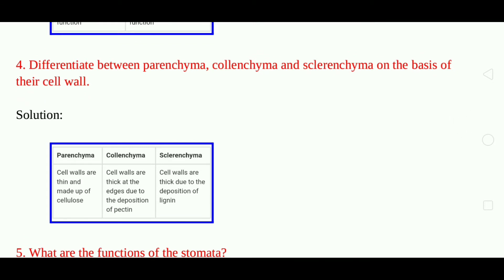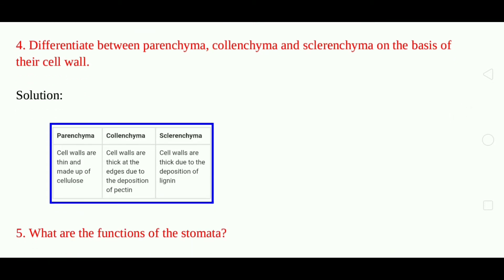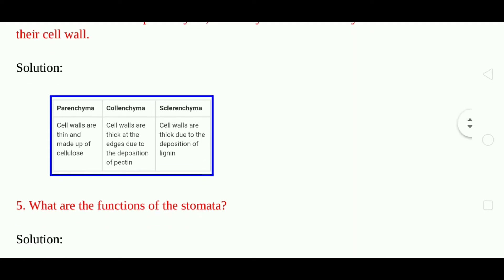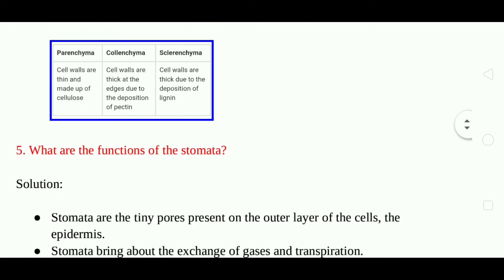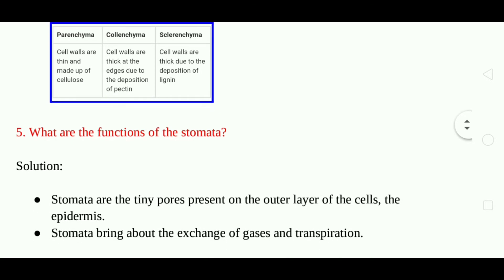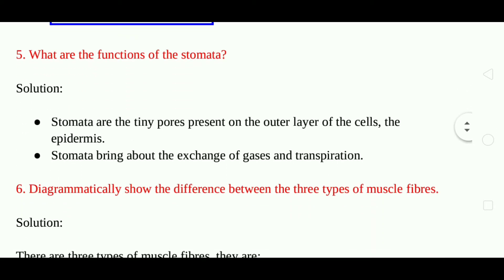Question 4: Differentiate between parenchyma, collenchyma, and sclerenchyma on the basis of their cell wall. Answer: Parenchyma — cell walls are thin and made up of cellulose. Collenchyma — cell walls are thick at the edges due to the deposition of pectin. Sclerenchyma — cell walls are thick due to the deposition of lignin.